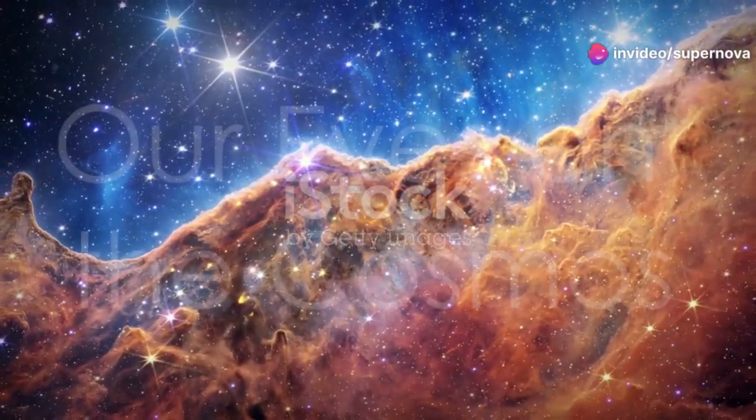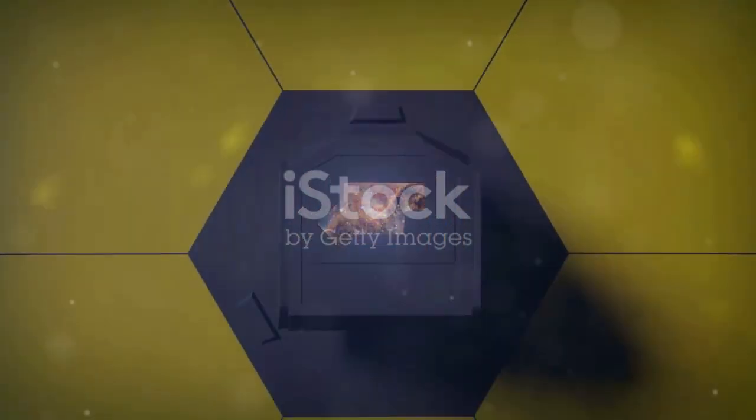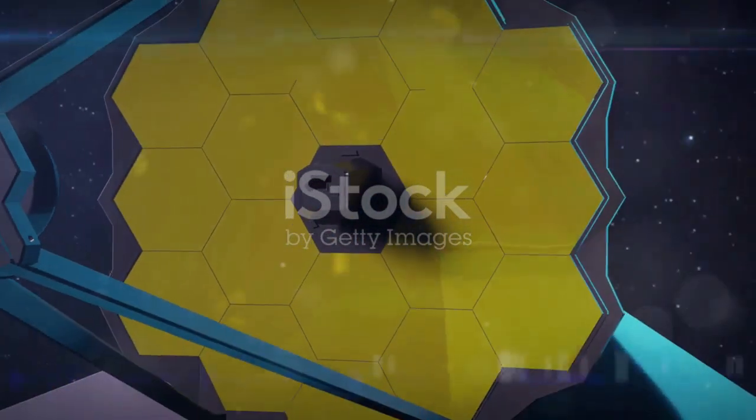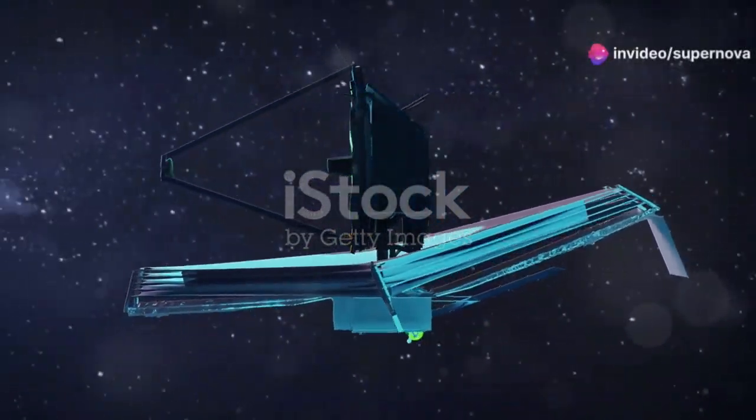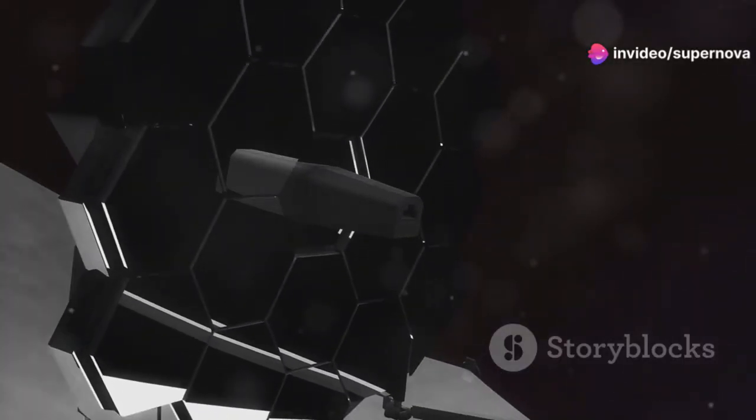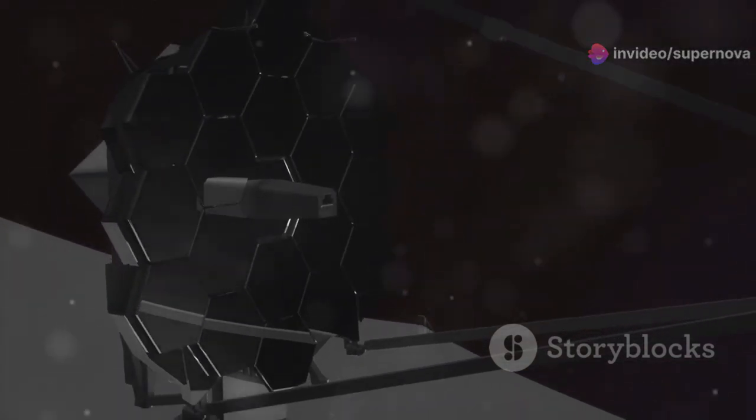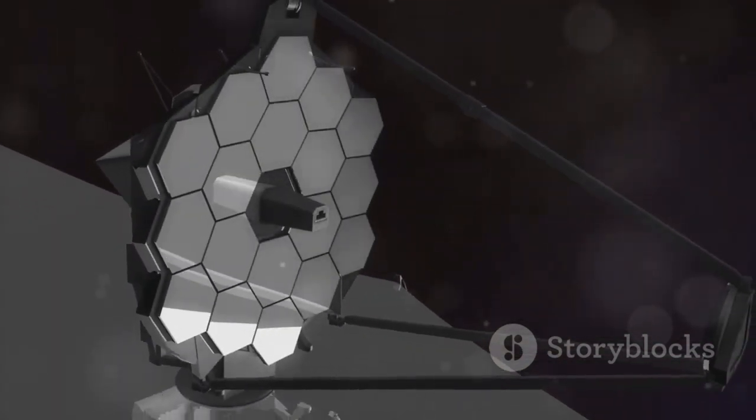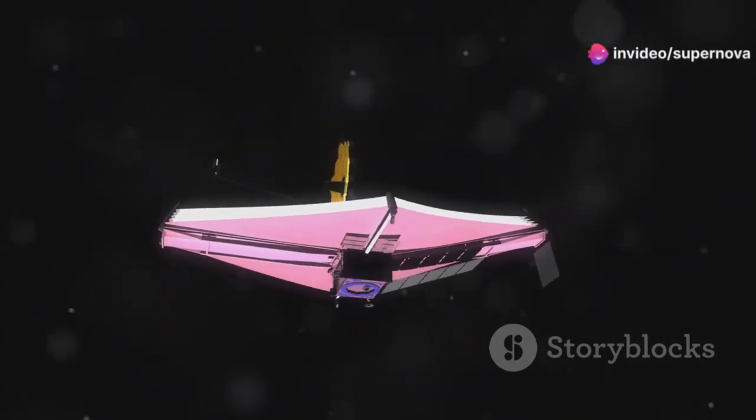The James Webb Space Telescope, often referred to as JWST, is the most powerful telescope ever built by humanity. It represents a monumental leap in our quest to understand the cosmos. Launched on Christmas Day in 2021, this marvel of engineering orbits the Sun at a distance of one million miles from Earth. Its journey to this position was a feat of precision and collaboration among scientists and engineers from around the world.